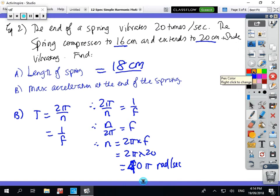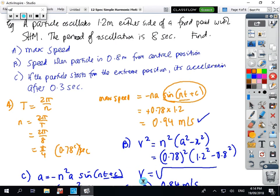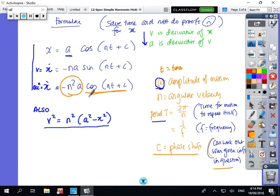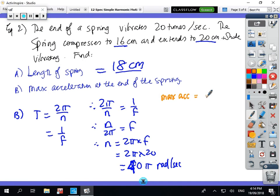Then what do we do with that number? So max acceleration will be, if you go back to acceleration formulas, that number when cos is equal to 1. So we've got -N² A, so we've got 40π squared times 20, which is 3200π² centimeters per second squared. See how we go with that one. One more example to go.